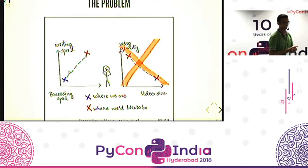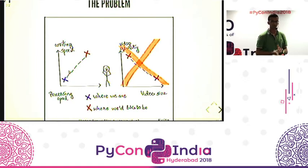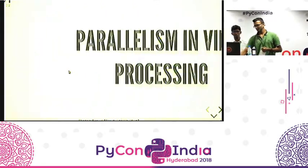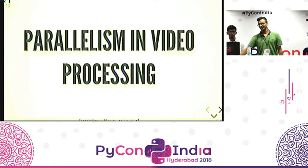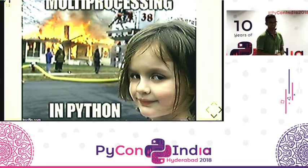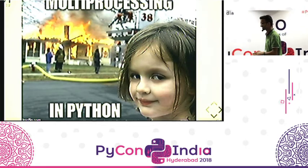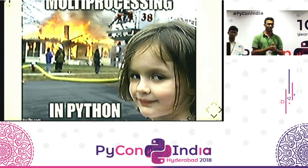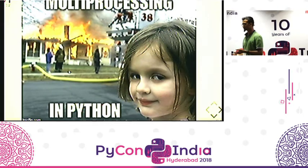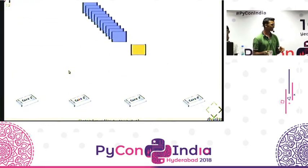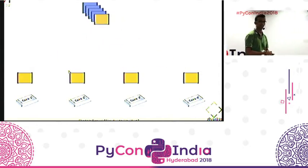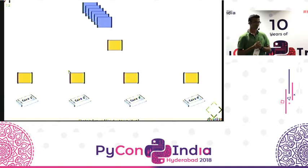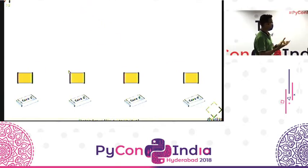The bigger problem you'll hardly find help about online is how to actually speed up your video processing in Python. This brings us to parallelism in video processing. If you talk about multiprocessing in Python, most people have a bad experience, and it's easy to get a bad experience with multiprocessing or multithreading in video processing too. If we have four cores and 10,000 frames, most of us would think to sequentially allocate frames one after the other to four cores. Except when you try running this code, in all probability it'll run worse than a single core.